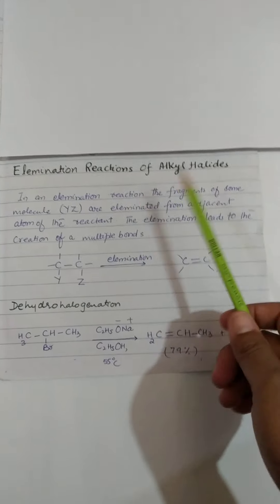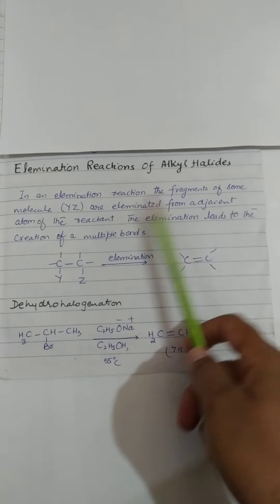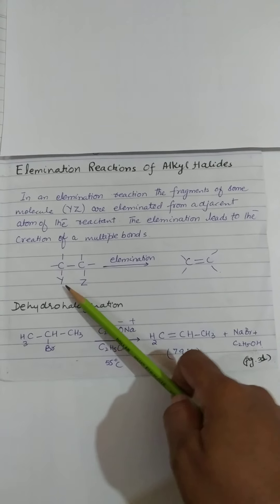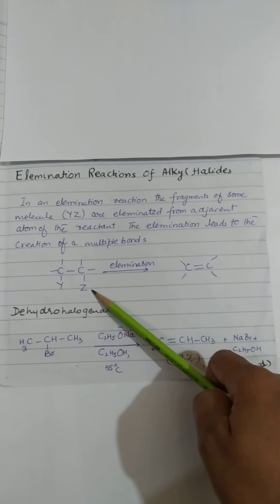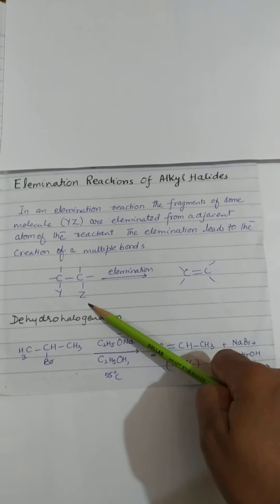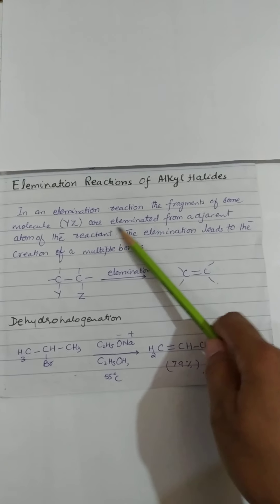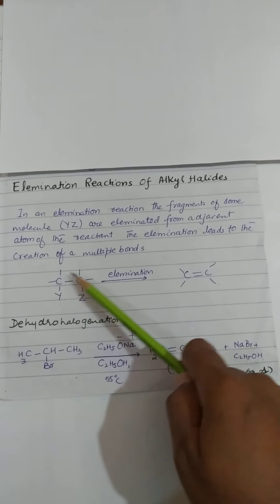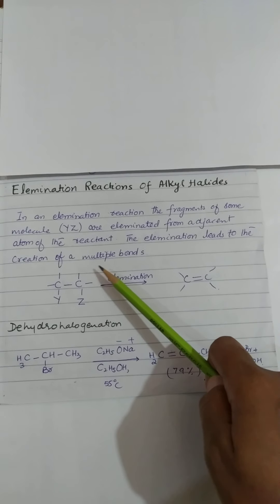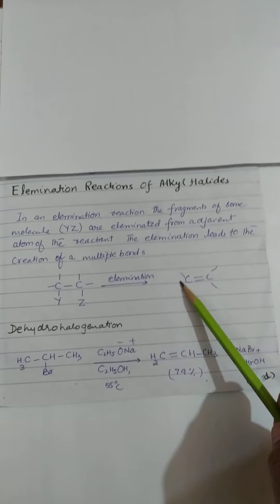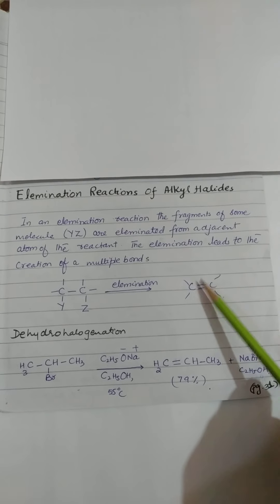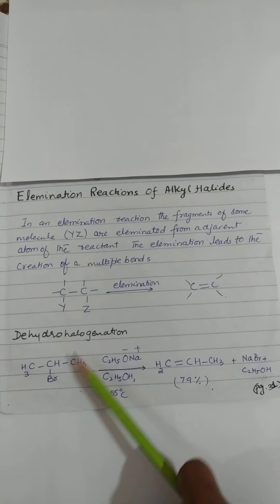یعنی elimination reaction میں fragments جو ہوتے ہیں molecule کے، general terminology میں YZ سے show کیے گئے ہیں۔ یہاں پہ کوئی بھی elements ہو سکتے ہیں جو eliminate ہوتے ہیں adjacent carbon سے reactant کے۔ The elimination leads to creation of multiple bonds، یعنی after elimination double or triple bond form ہوتے ہیں۔